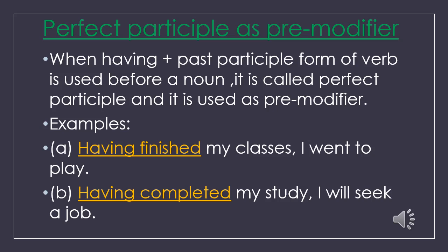Now, perfect participle as premodifier. When 'having' plus the past participle form of a verb is used before a noun, it is called perfect participle and it is used as premodifier. Example A: 'Having finished my classes, I went to play.' Example B: 'Having completed my study, I will seek a job.' Here, 'having finished' and 'having completed' are used as premodifiers.